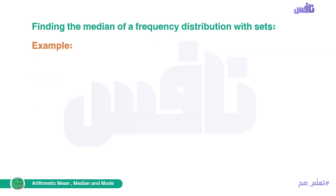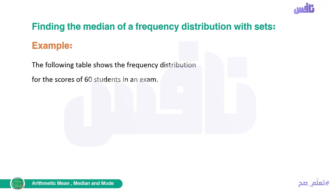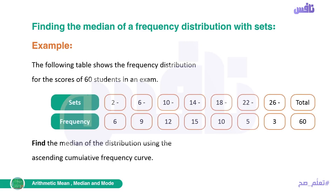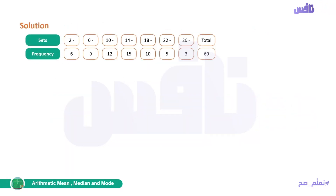What's new this year: how to find the median of a frequency distribution with sets. We will have a frequency table with sets and find the median from it using the ascending cumulative frequency curve. The following table shows the frequency distribution of the scores of sixty students in an exam. To draw the ascending cumulative frequency curve, we must first draw the ascending cumulative frequency table.